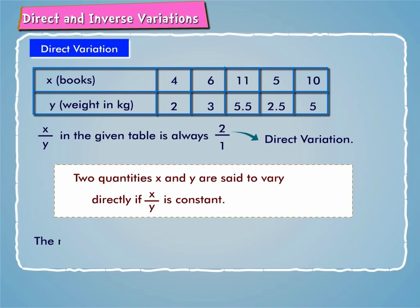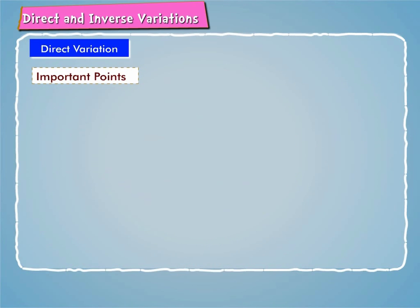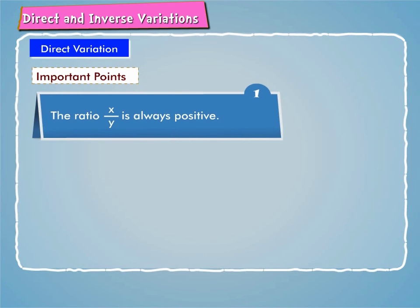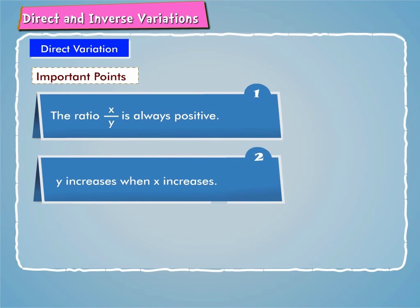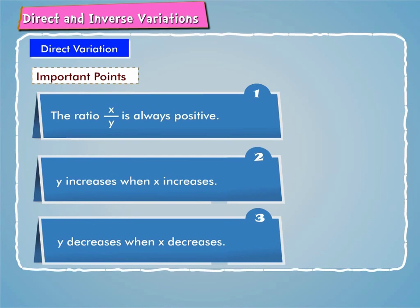The ratio x by y equals k is said to be constant of variation. Some important points to be noted are: 1. The ratio x by y is always positive. 2. y increases when x increases. 3. y decreases when x decreases.